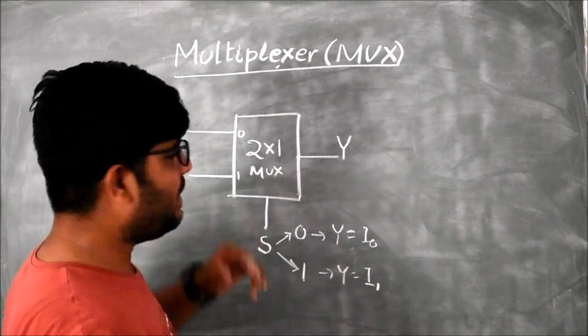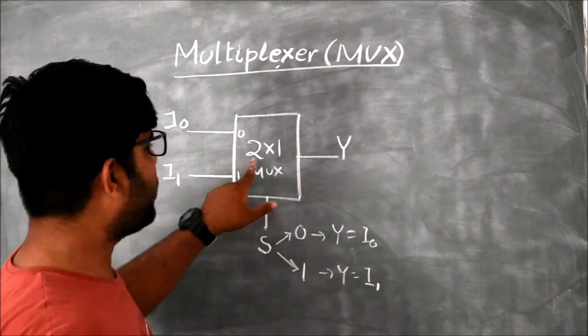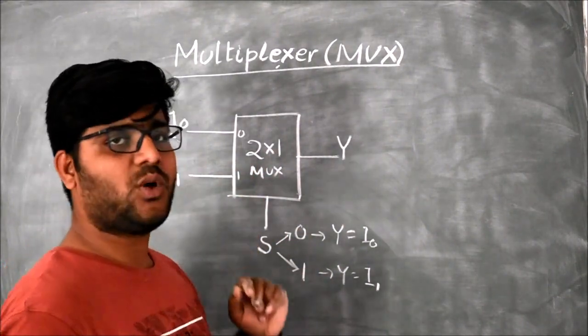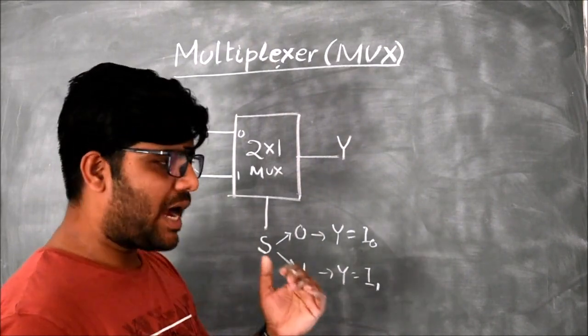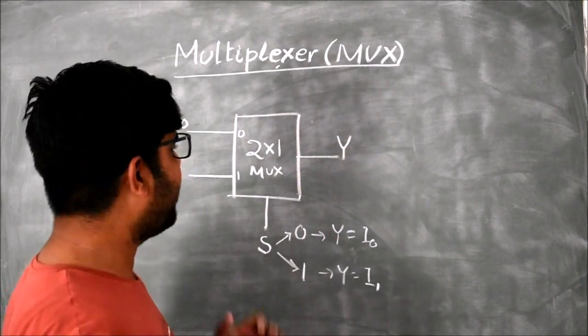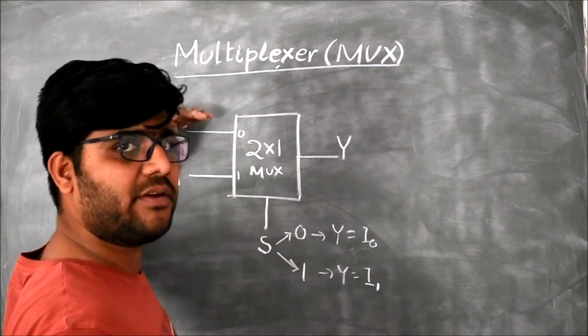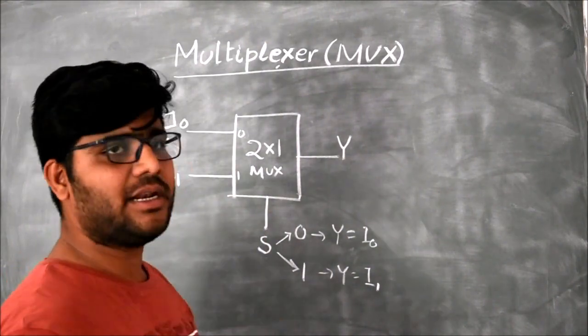The multiplexer can be of 2 cross 1, 4 cross 1, 8 cross 1, and 16 cross 1. According to the number of inputs, the selection lines increase.